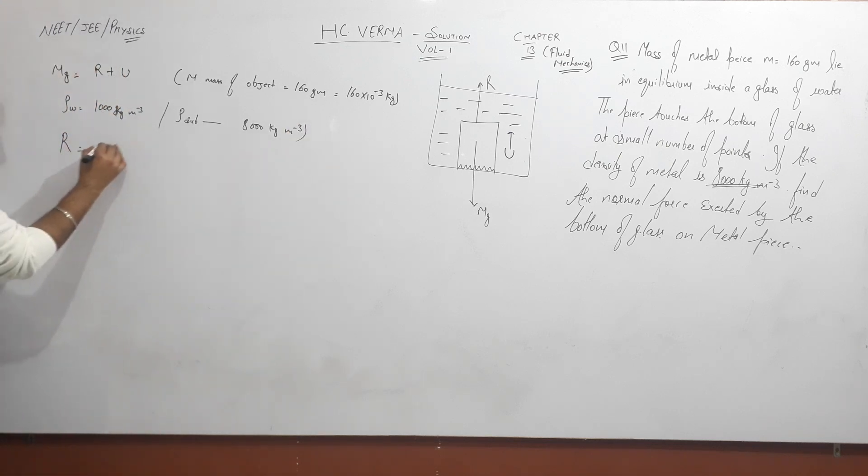What to find? R. To find R, I'll take everything to one side. Mg minus U is equal to R. What is U? The buoyant force. What does Archimedes say? Buoyant force is equal to the weight of the water displaced.